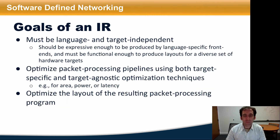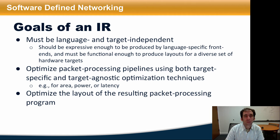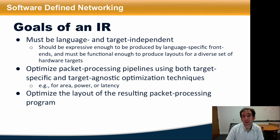An intermediate representation needs to be both language and target independent. It should be expressive enough to be produced by a language-specific front-end, and it must be functional enough to produce layouts for a diverse set of hardware targets. The IR should permit the compiler to optimize packet processing pipelines using both target-specific and target-agnostic optimizations for area, power, or latency.